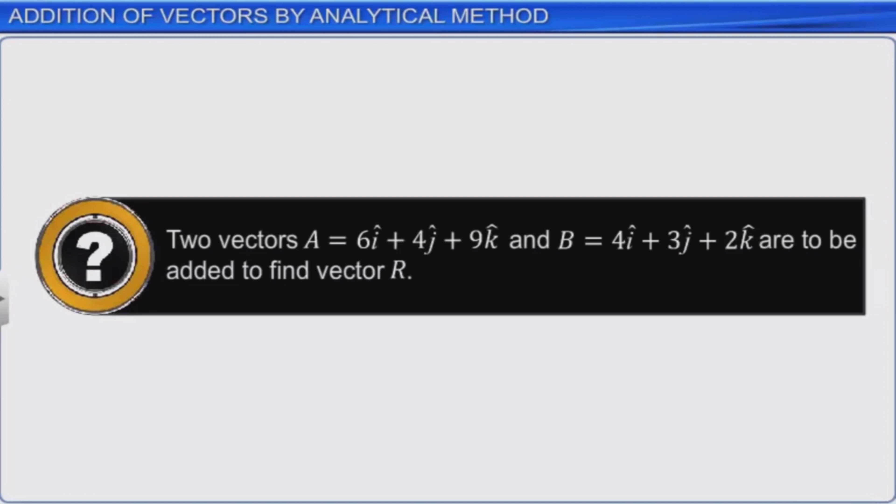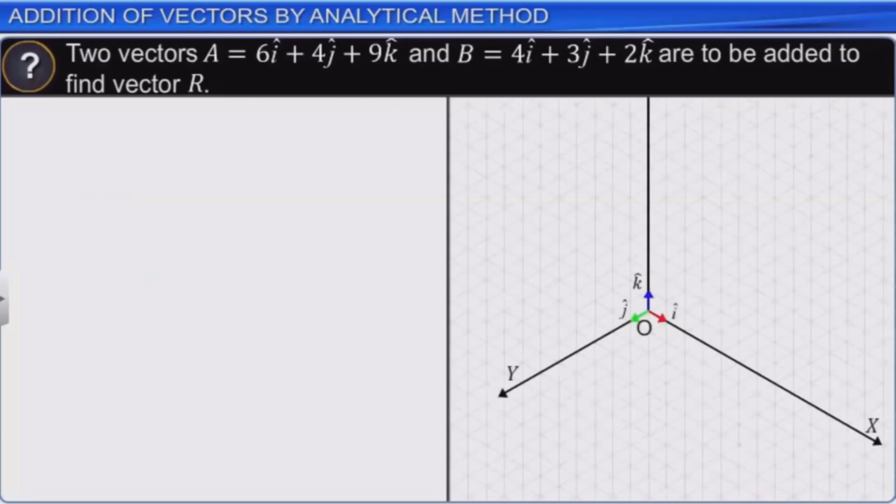Two vectors A is equal to 6i plus 4j plus 9k and B is equal to 4i plus 3j plus 2k are to be added to find vector R. To visualize the process, you can represent A on the graph paper by joining the point 6, 4, 9 to the origin O.